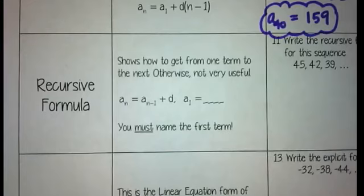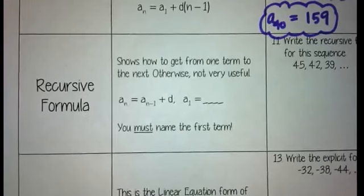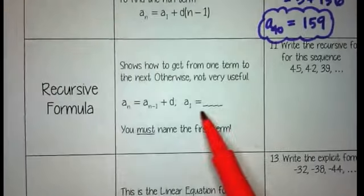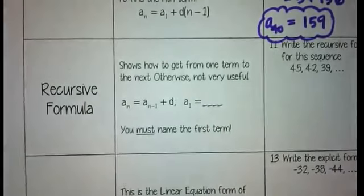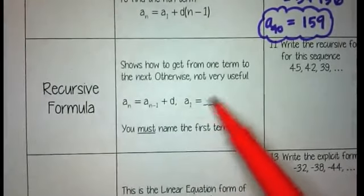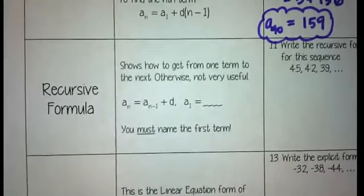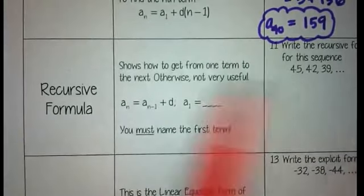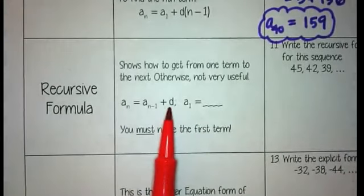Things that have to happen, you have to name the first term. Because if you don't name the first term, no one will know where the pattern starts. So you have to have a starting point. So you have to name what the first term is. Then all you're doing is filling in the value for the D.